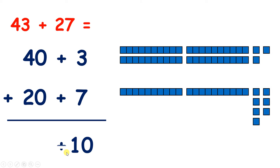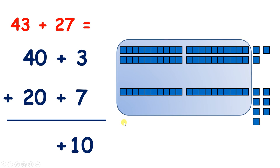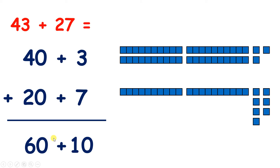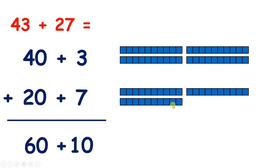And now we can add our tens: 4 tens plus 2 tens, or 40 plus 20, which is 60. Now if we have 10 units, we can have 1 ten. So let's regroup these units into a 10. You can see that we now have 7 tens and no units. So 60 plus 10 is 70.